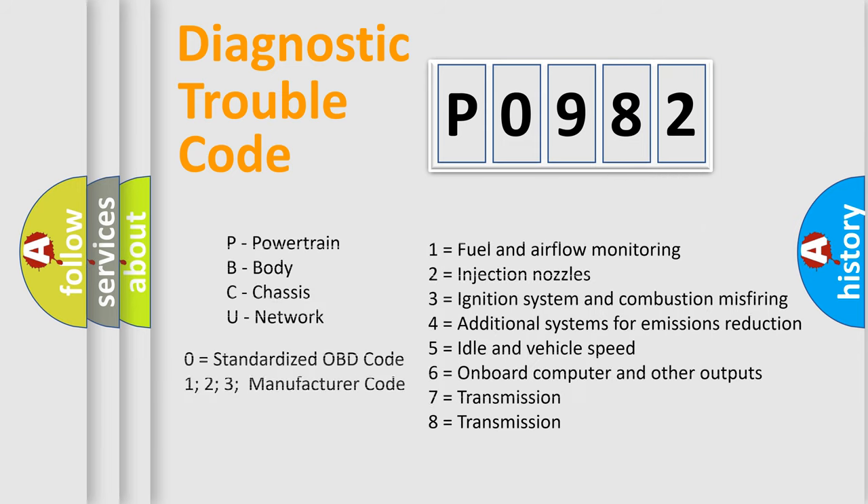Only the last two characters define the specific fault of the group. Let's not forget that such a division is valid only if the second character code is expressed by the number zero.